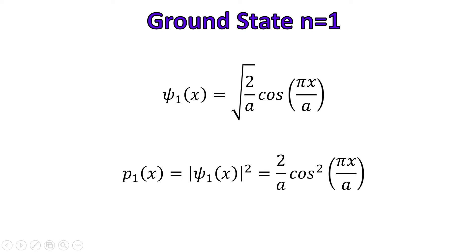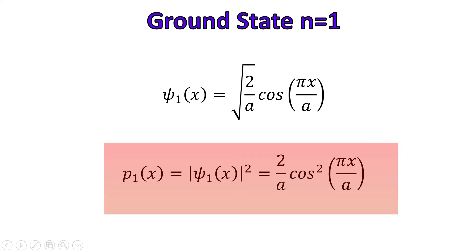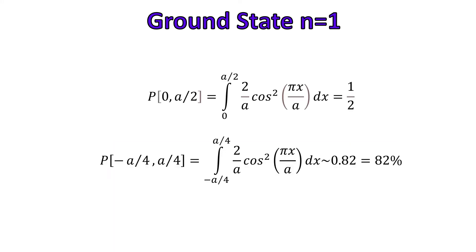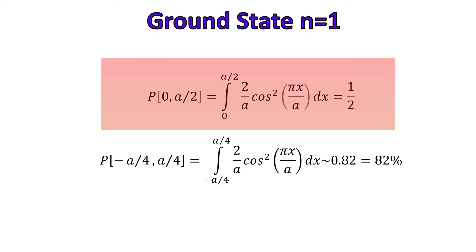For the ground state we use the wave function for n = 1. The probability density of the particle inside the box depends on the square modulus of the wave function, which gives 2/a · cos²(πx/a). The probability of the particle being between 0 and a/2 is given by the integral of the square modulus of the wave function from 0 to a/2.